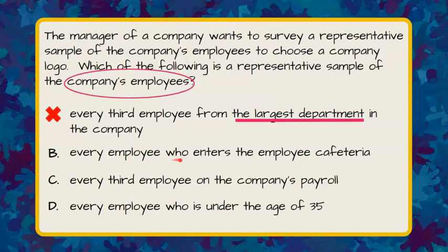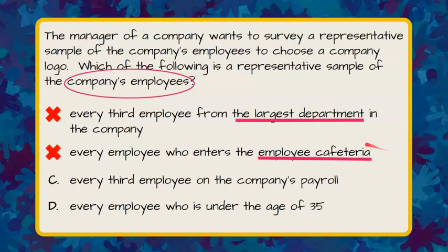Part B says every employee who enters the employee's cafeteria. Well, the cafeteria may be somewhere where some people don't ever visit. At my school, I never go to the teacher's cafeteria. So that would not be a random survey — that would be biased to anybody who just happens upon the cafeteria.